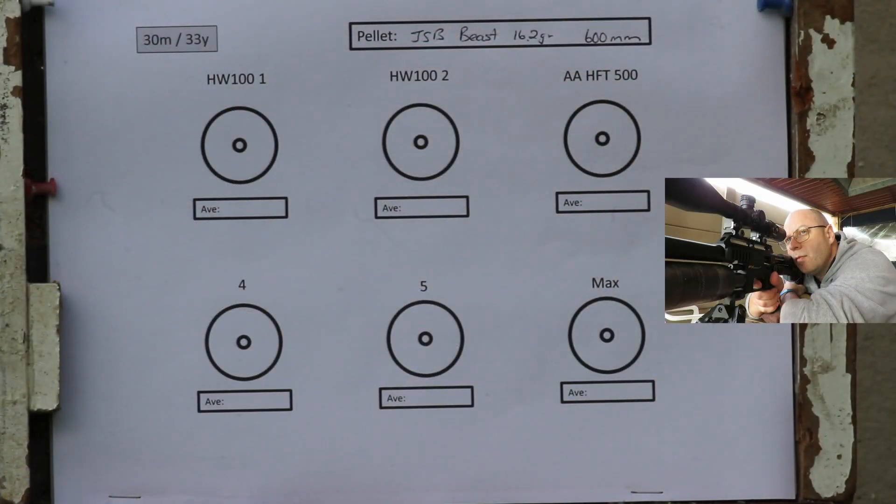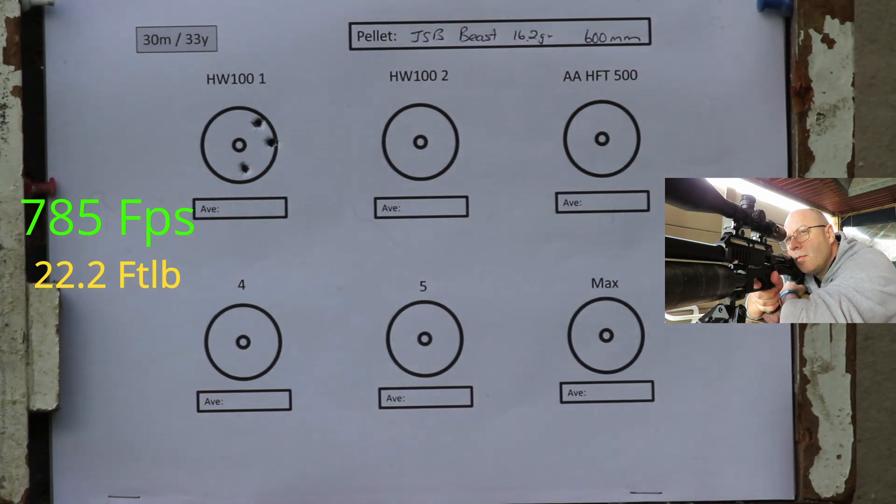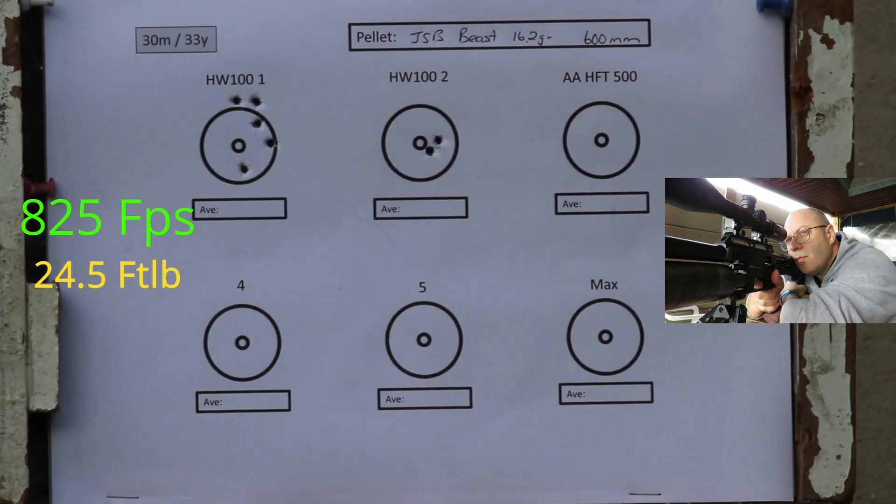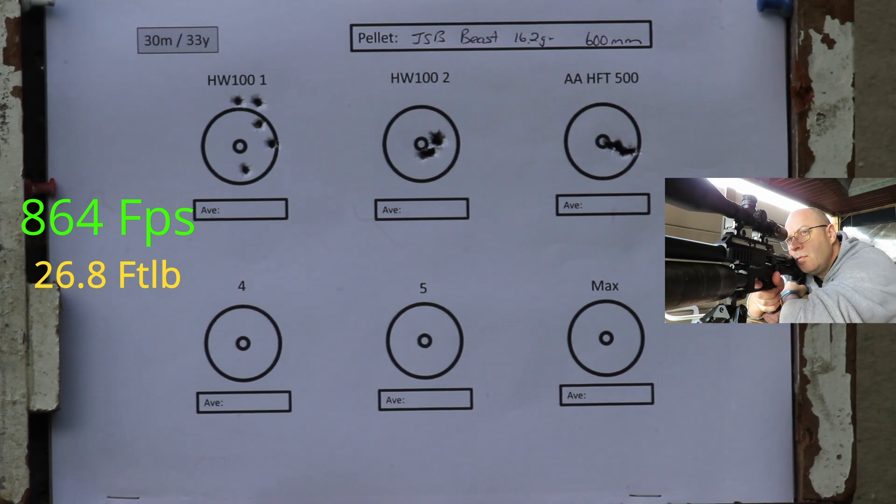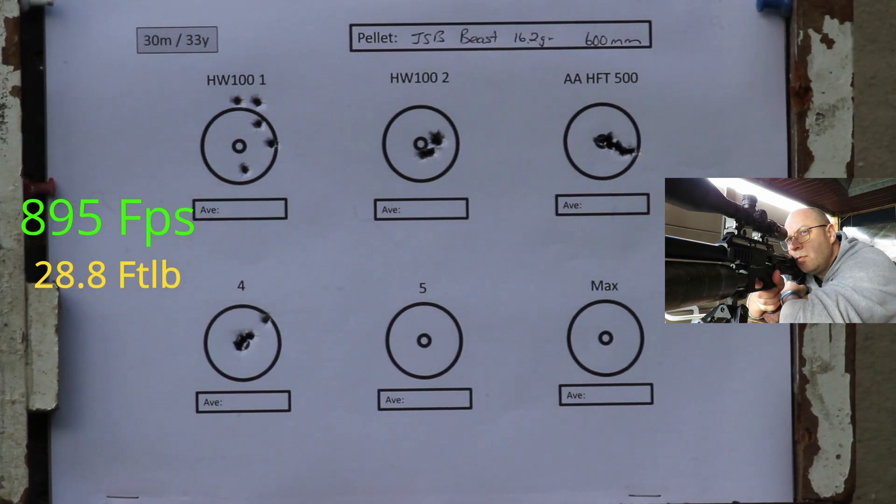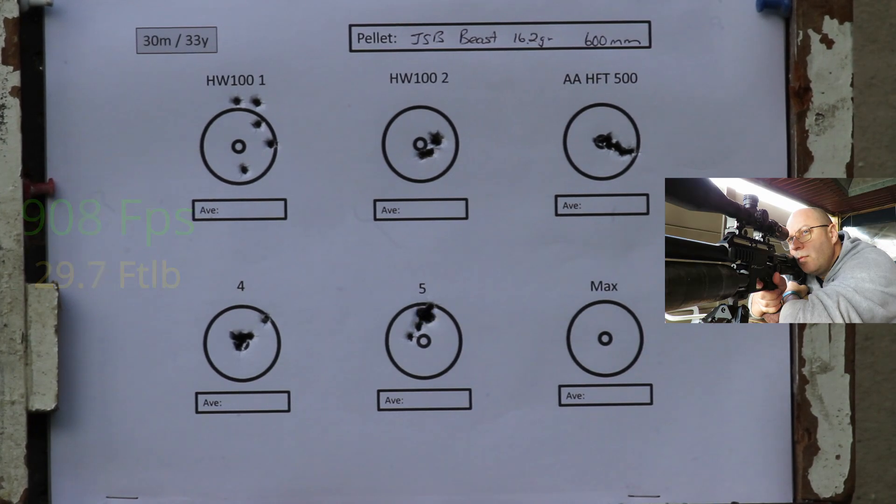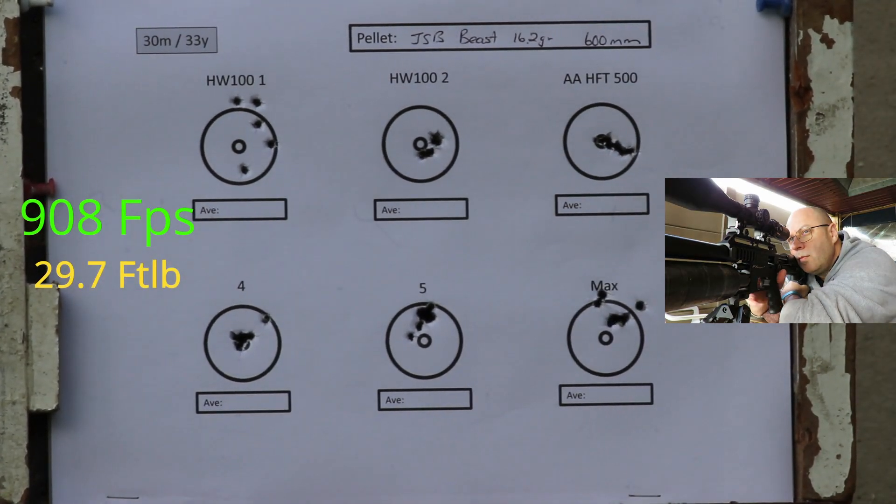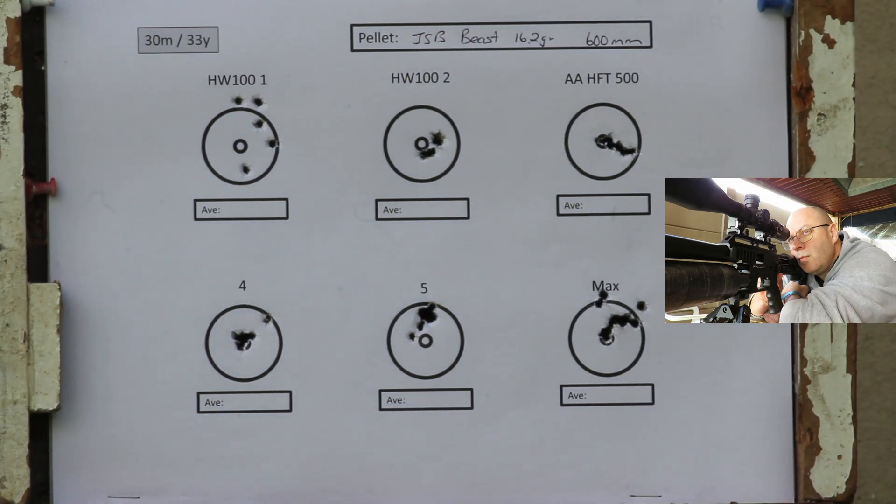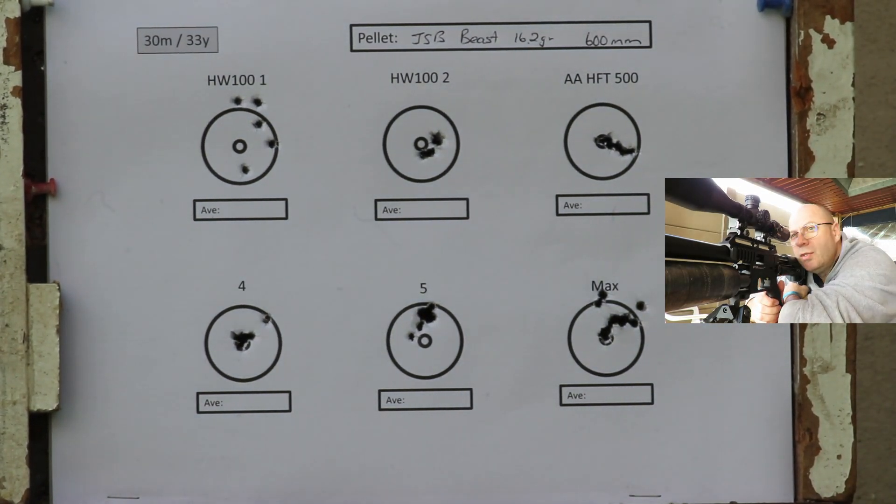Right, last one with the 600 millimeter barrel. This is the Beasts in 16.2 grain. Same routine: power setting one all the way up to max.